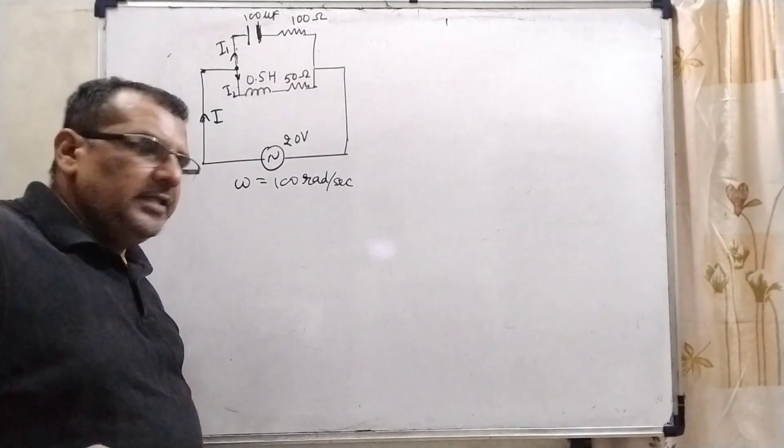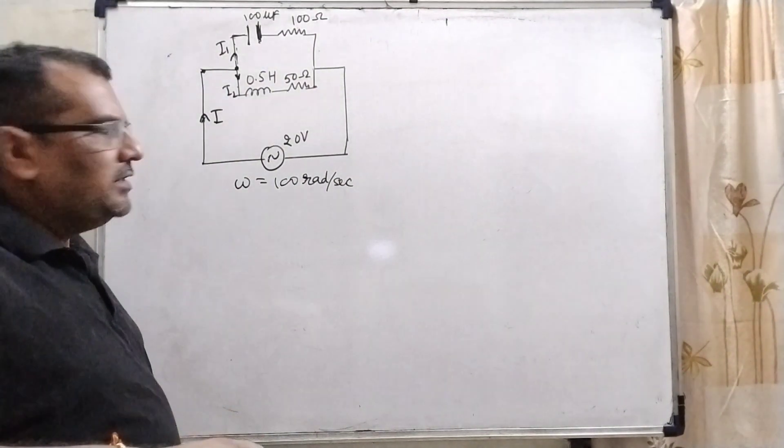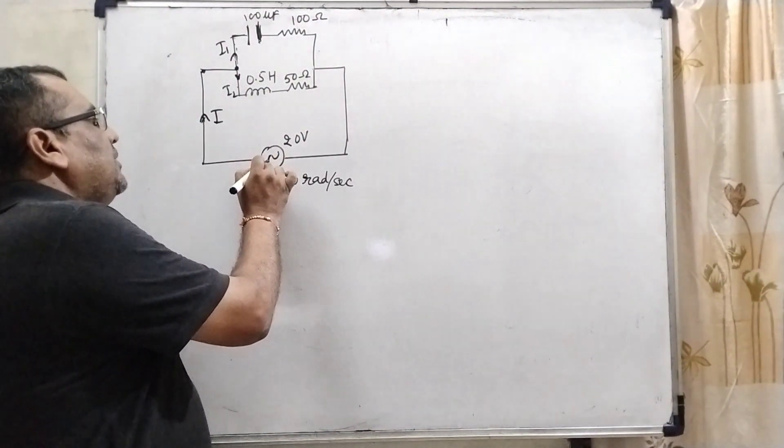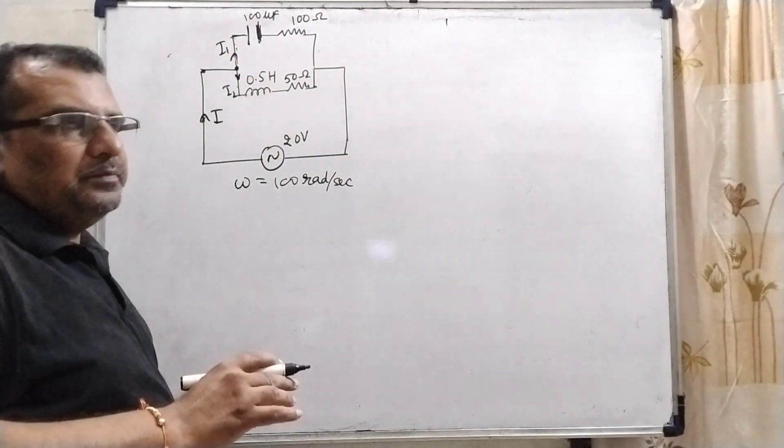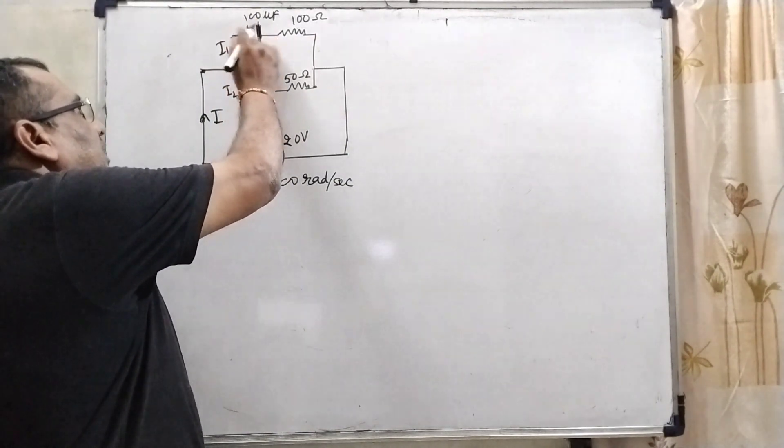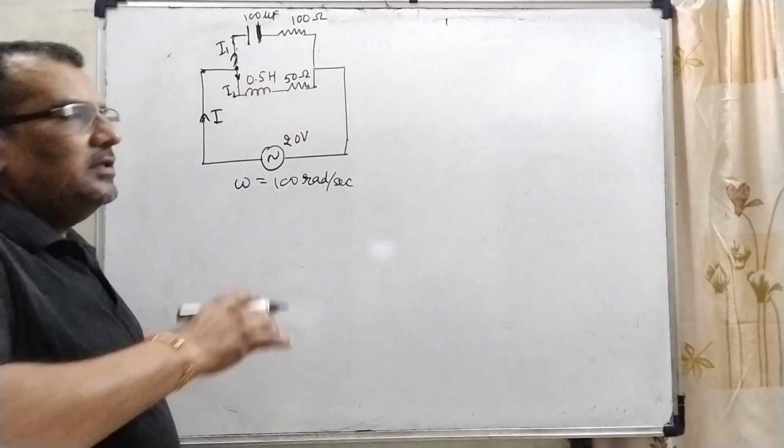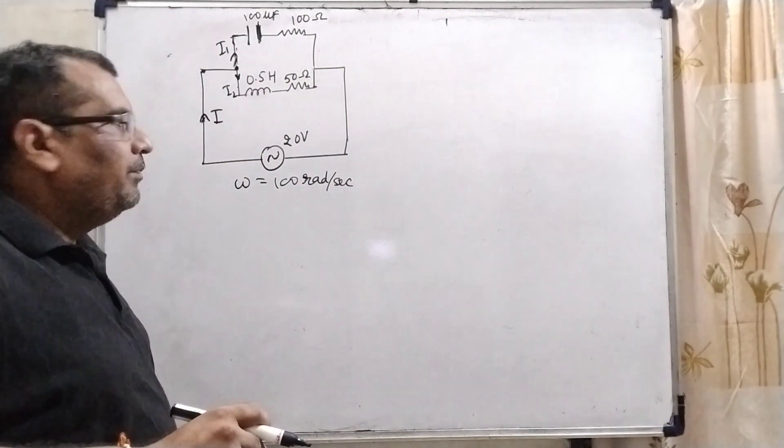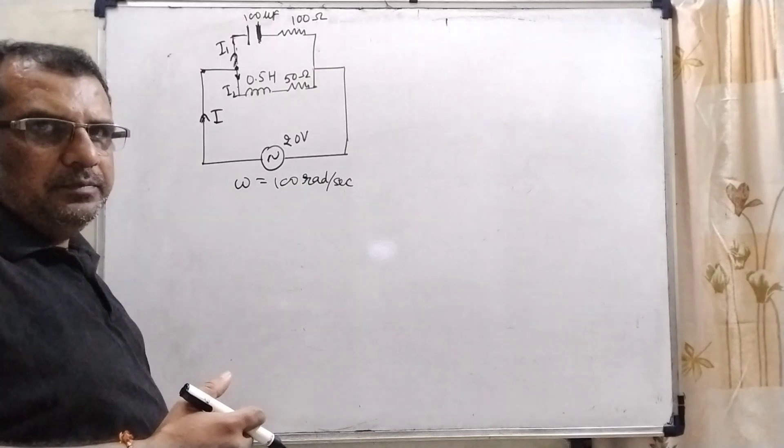You see what the question says. Here we have given input potential 20 volt and frequency, angular frequency that is 100 radian per second. And here the current passing through from this input that is I, and splitting in two parts using Kirchhoff's law. Here splitting in two parts I1 and I2. One by one we have to find out I1 and I2. But before finding out I1 and I2, we have to find out the impedance.